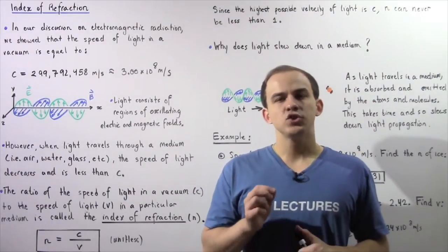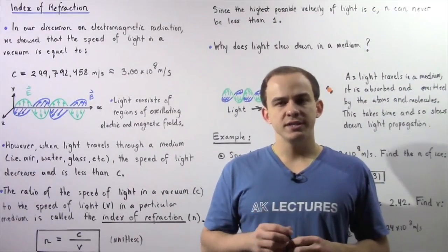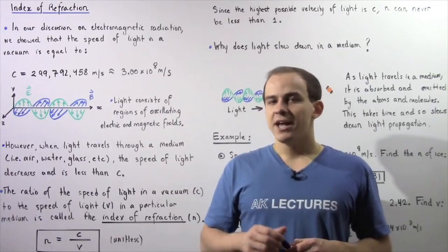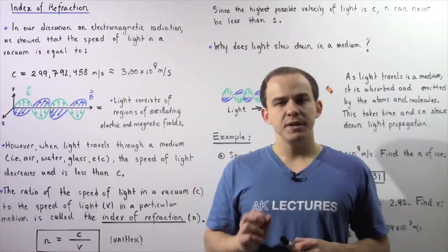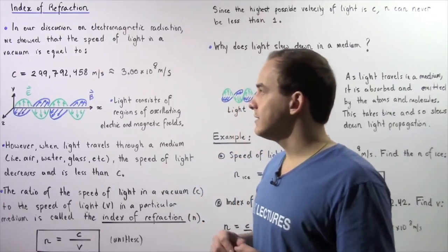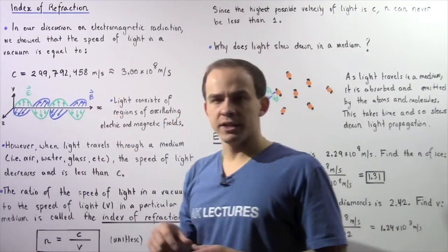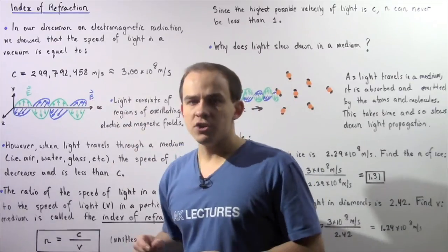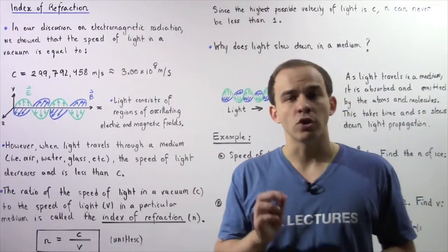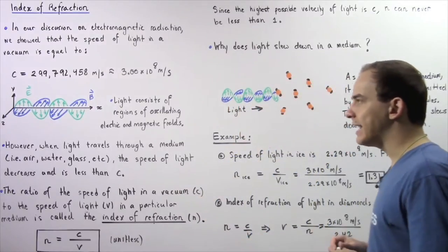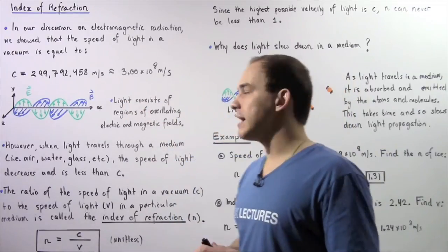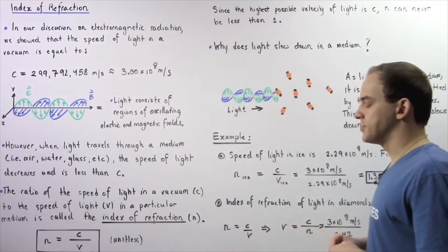In our discussion on electromagnetic radiation, we said that light is one form of electromagnetic radiation. We were also able to derive the speed of light inside a vacuum. The speed of light inside a vacuum, given by lowercase c, is equal to 299,792,458 meters per second, which is approximately equal to 3.00 times 10 to the 8 meters per second.